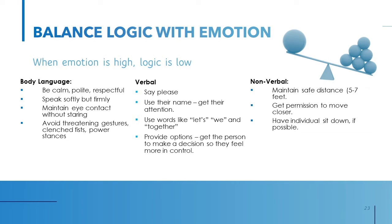From a nonverbal standpoint, maintain a safe distance of about 5 to 7 feet, and get permission before moving closer. If you can, have the person sit down. Throughout your conversation with someone acting irrationally, try to maintain that balance — because the minute the situation gets too emotional, logic goes out the window. But you also can't be like a machine or an automaton. You have to demonstrate compassion, empathy, and a calm, professional demeanor.